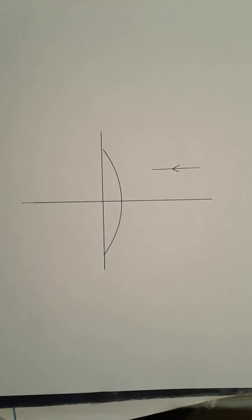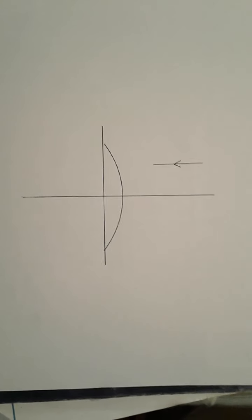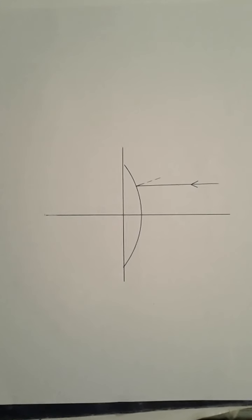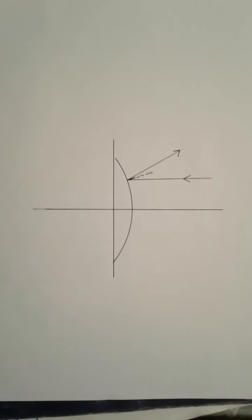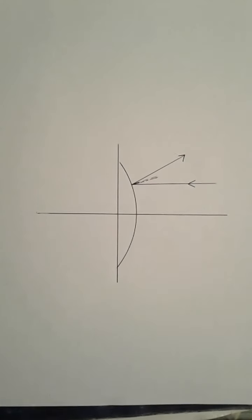Here we have the convex mirror and a light ray is approaching parallel to the principal axis. I drew in the normal line and now it will reflect away from what appears to be a focus behind the mirror.